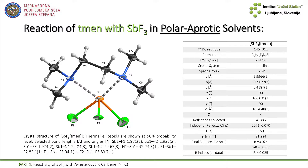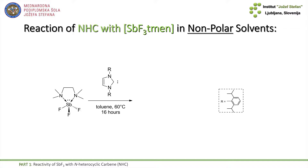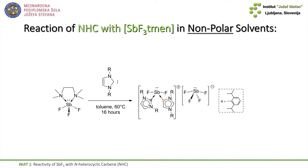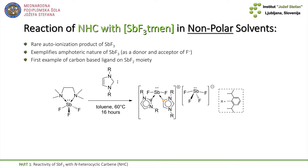We then did the next reaction: we took our complex and mixed it with carbene, hoping that the carbene would displace the amino ligand and form a neutral product that we were searching for. But that didn't happen. What happened is we got an ionic product.